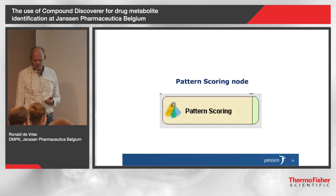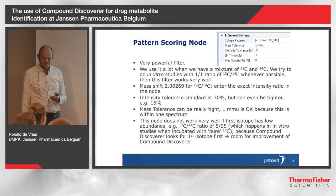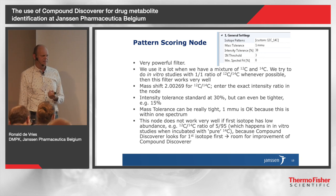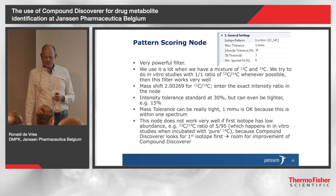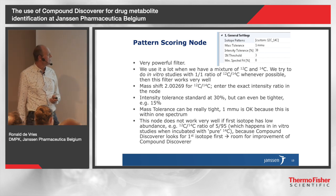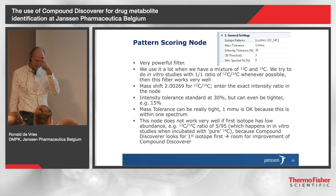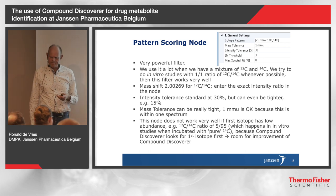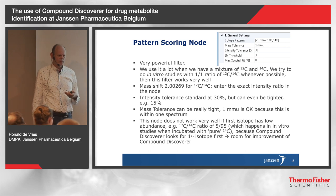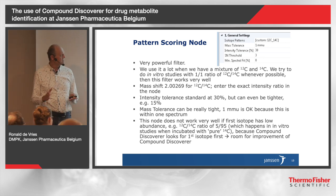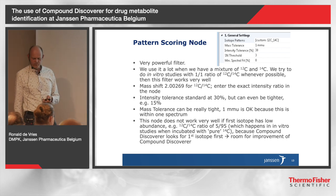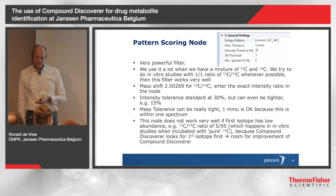Then the pattern scoring node — as I said, one of my favorites. For people who don't use this node a lot, what it actually does is it looks at the isotopic distribution and can filter on that. So if you have an atypical isotopic distribution, you can very easily fish out your hits. We use it a lot. For instance, if we have a radioactive study, for in vitro studies I always try to stimulate people to use a 1-to-1 ratio of carbon-12 and carbon-14 labeled material. You then get a very nice 1-to-1 ratio of both isotopes, and then you can nicely filter on this data using the pattern scoring node.